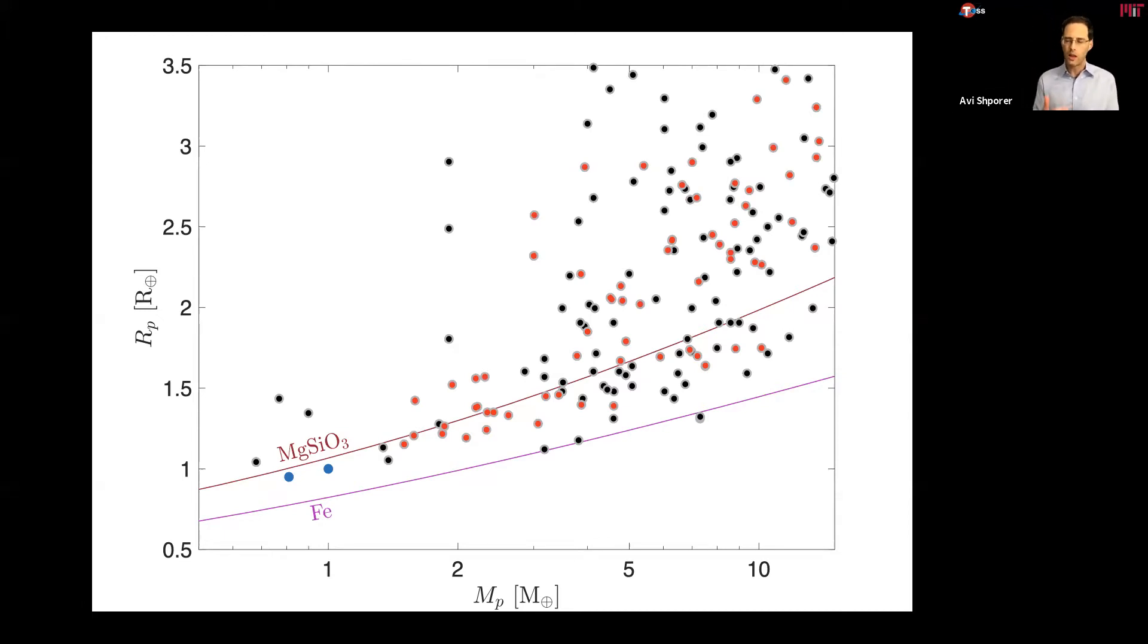And of course, it takes a long while actually since TESS observes a given star or detects a planet to confirm that that signal in the TESS data is real. It's coming from a real planet and then go and measure its mass and then publish it. So there is a very long delay of many months, usually more than a year since the TESS observations and the publication of a new planet. So as you can imagine, by the time of the next AGU meeting, the number of TESS discoveries in this diagram will probably double, if not more.